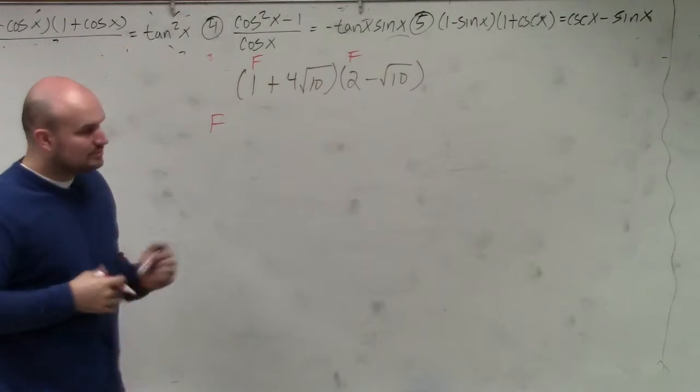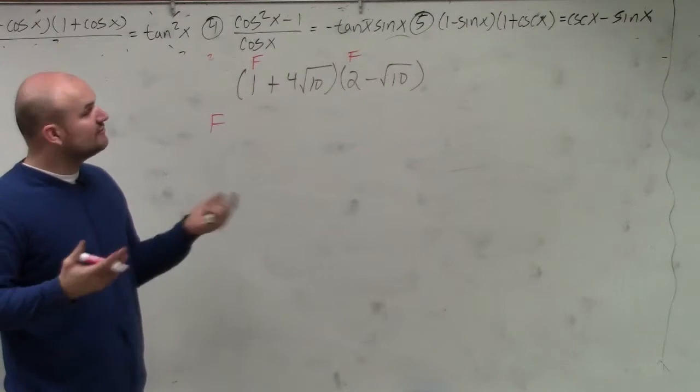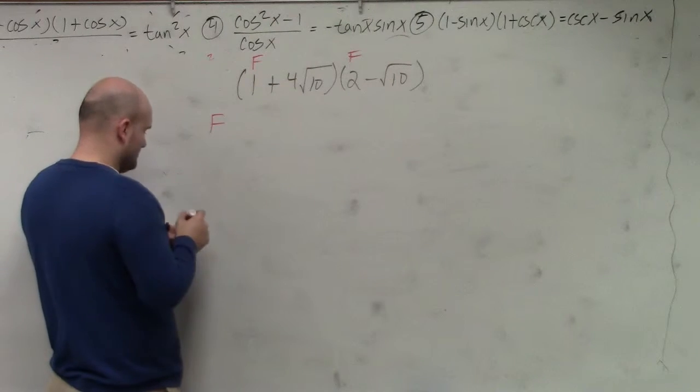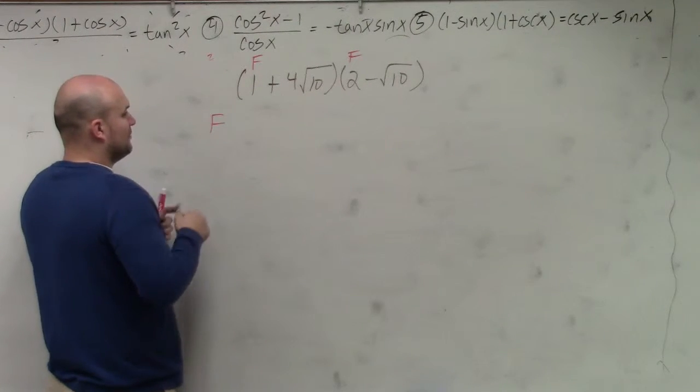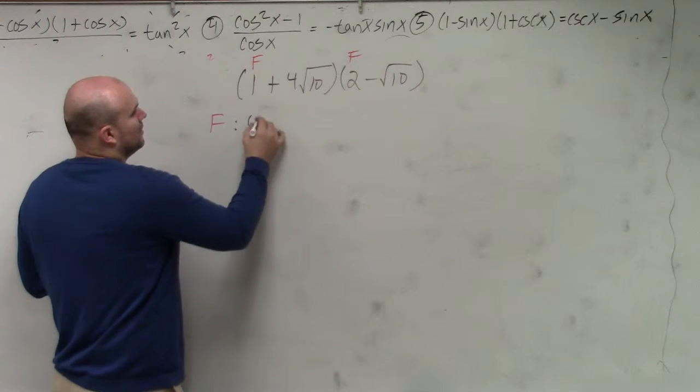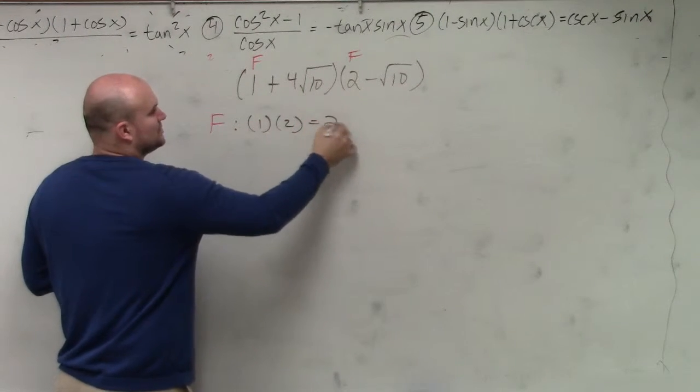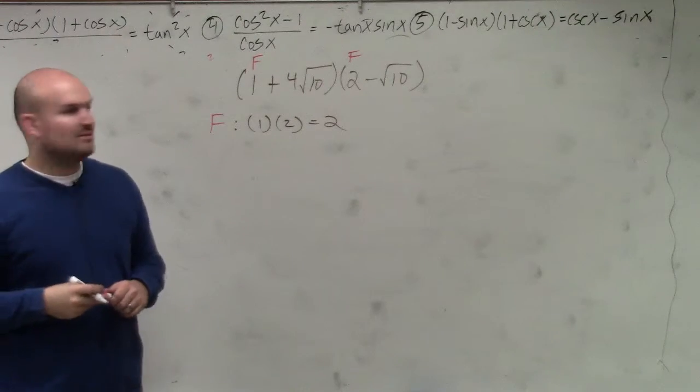So FOIL, which is an acronym—F stands for the first term in each binomial. So therefore, I'm simply going to multiply 1 times 2. Well, that just equals 2. Alright? That wasn't that bad.